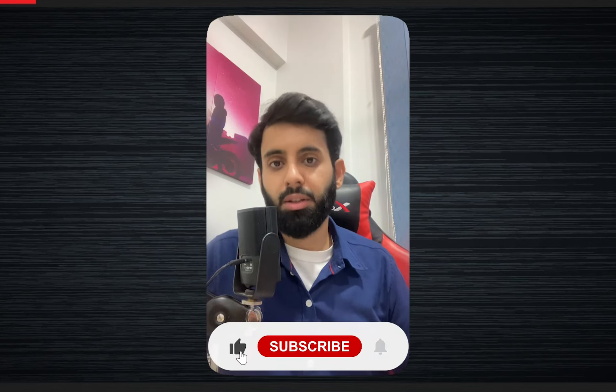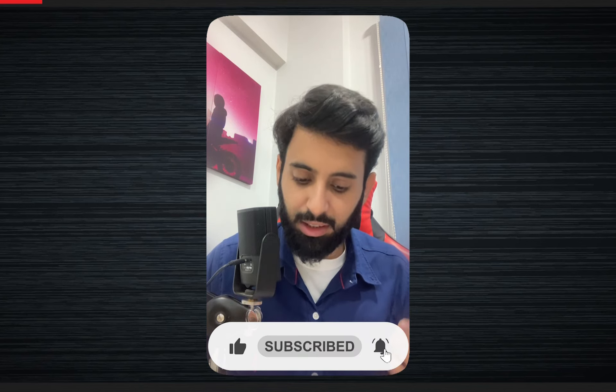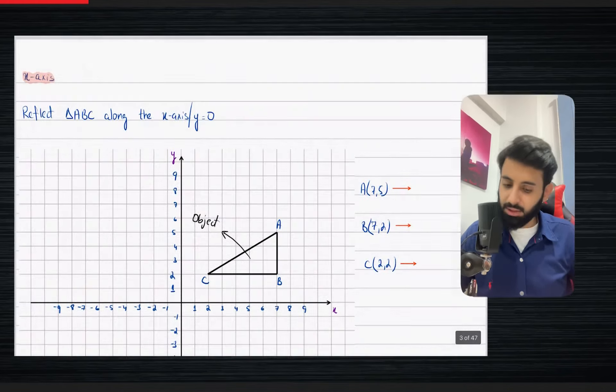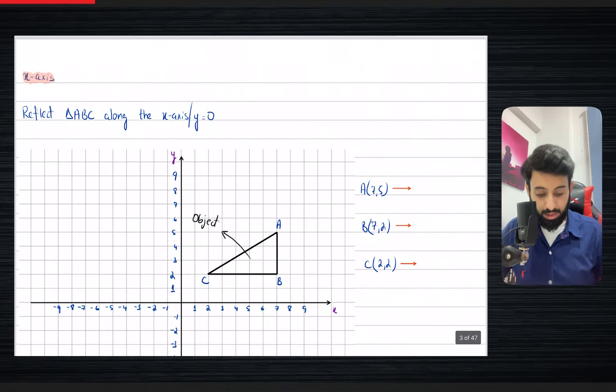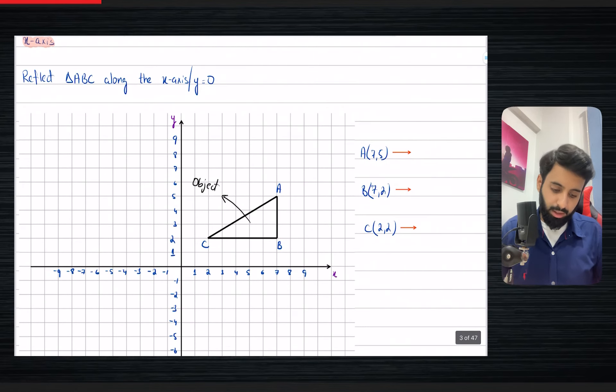In this video, I am going to be going through all four standard cases that I talked about earlier. Before we learn about them, let me tell you the objective: it's so that we don't always have to manually count the points of the object or how far it is from the line of reflection. We can just use the standard rule to reflect the object directly, saving a lot of time and effort.